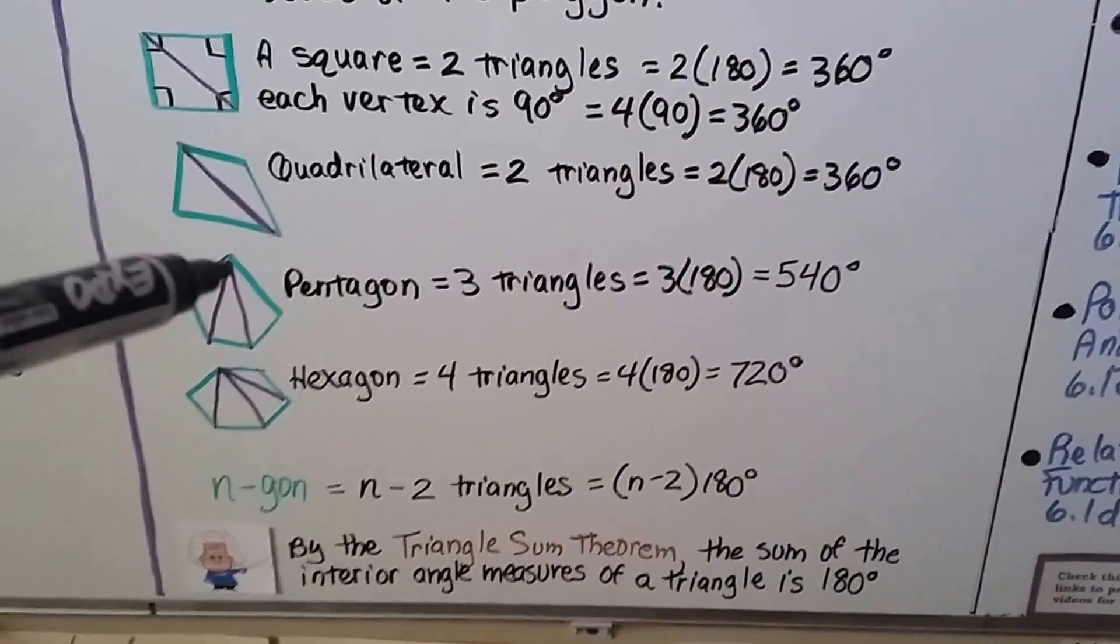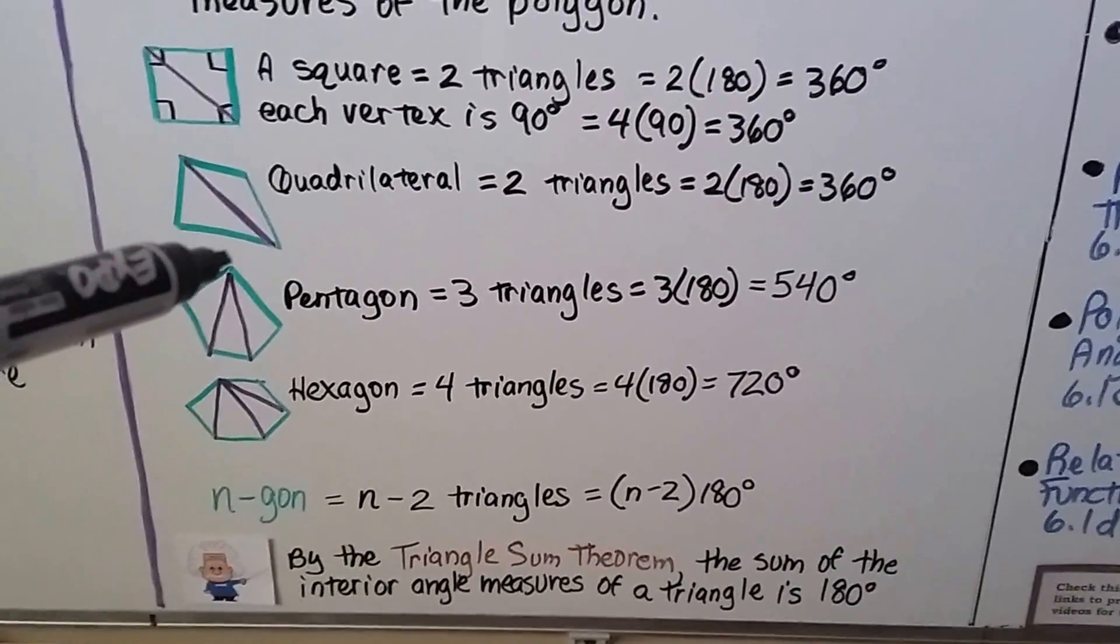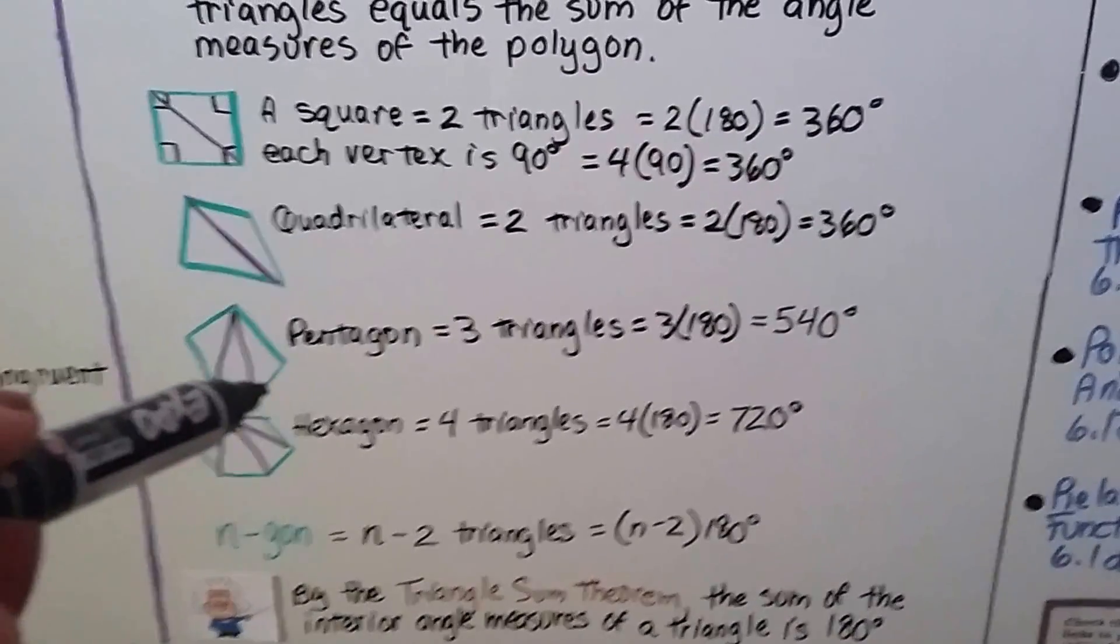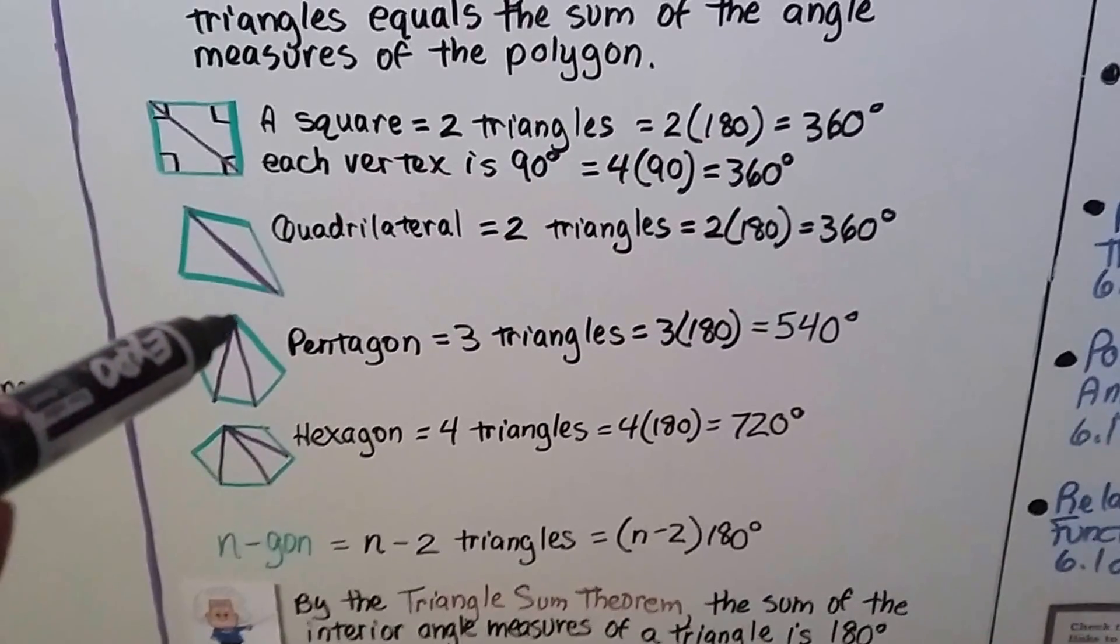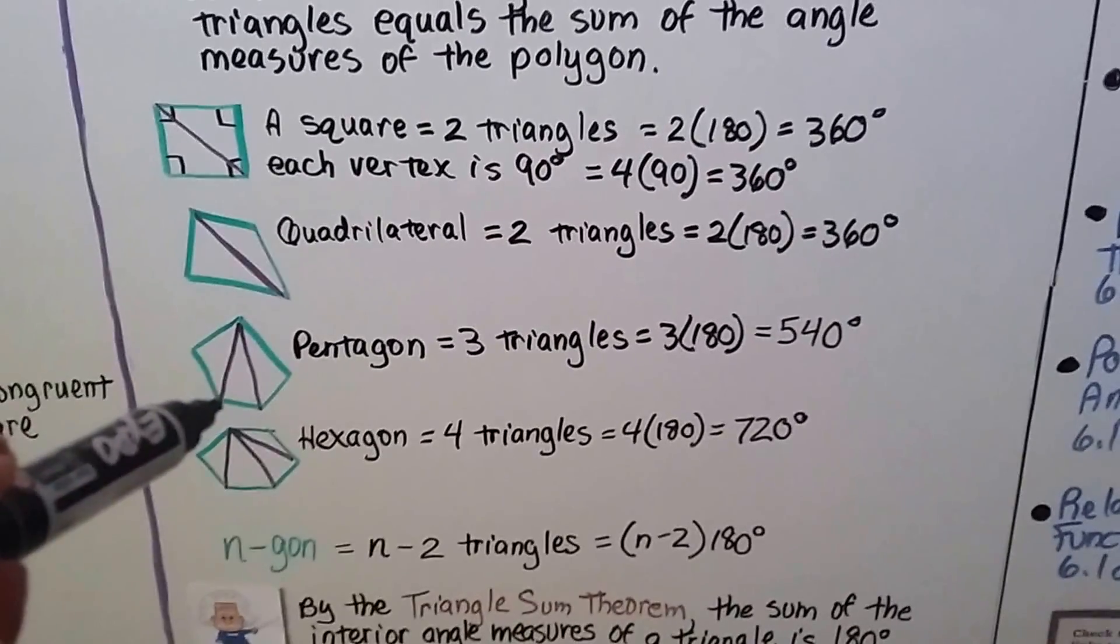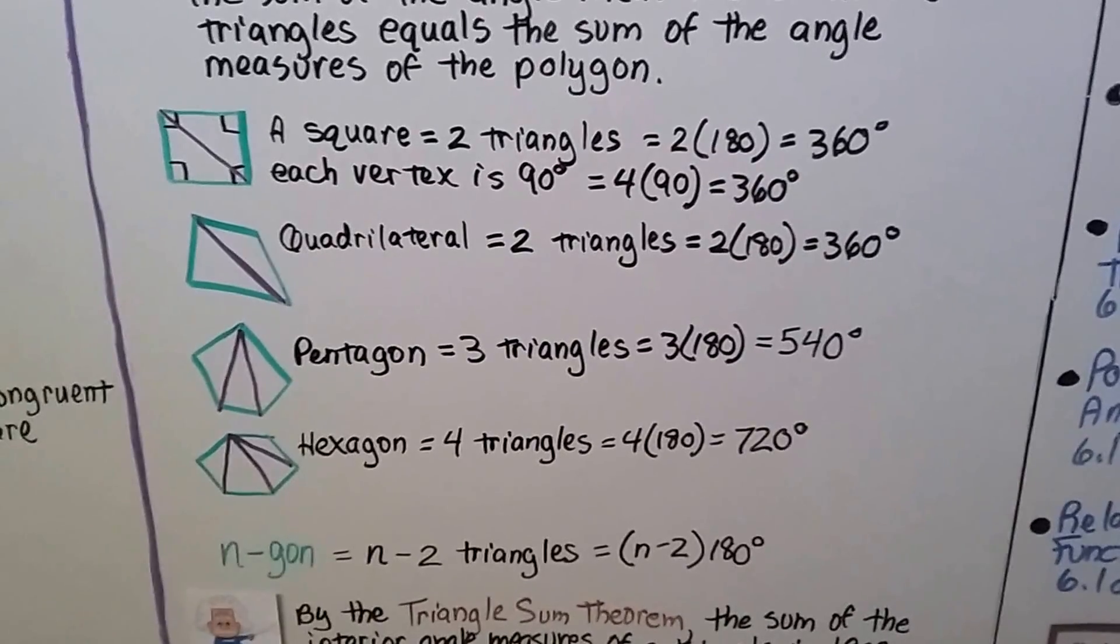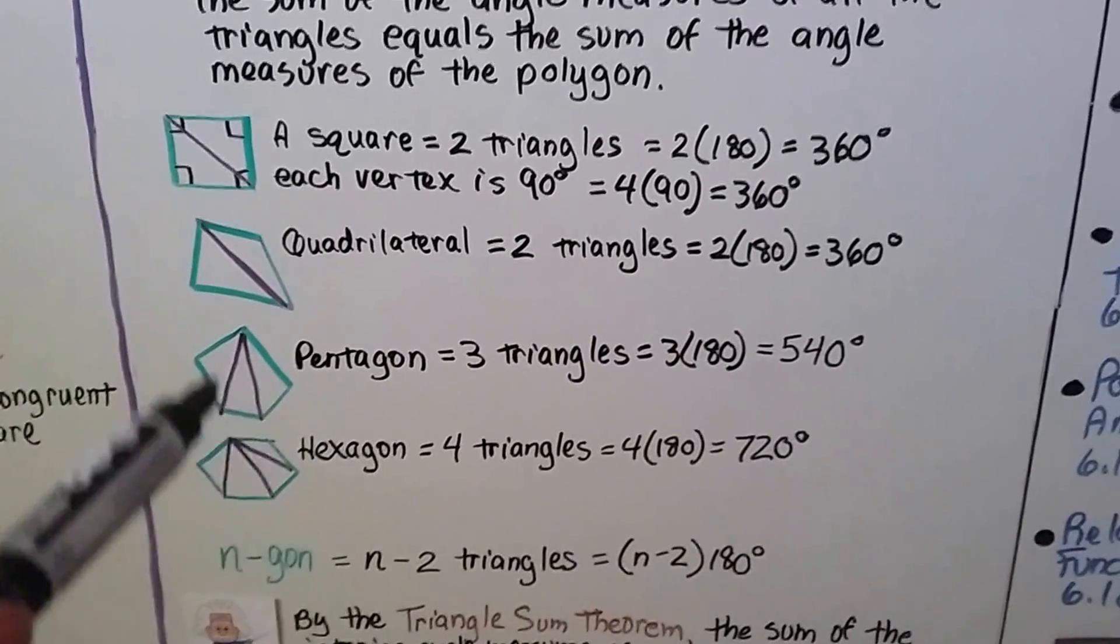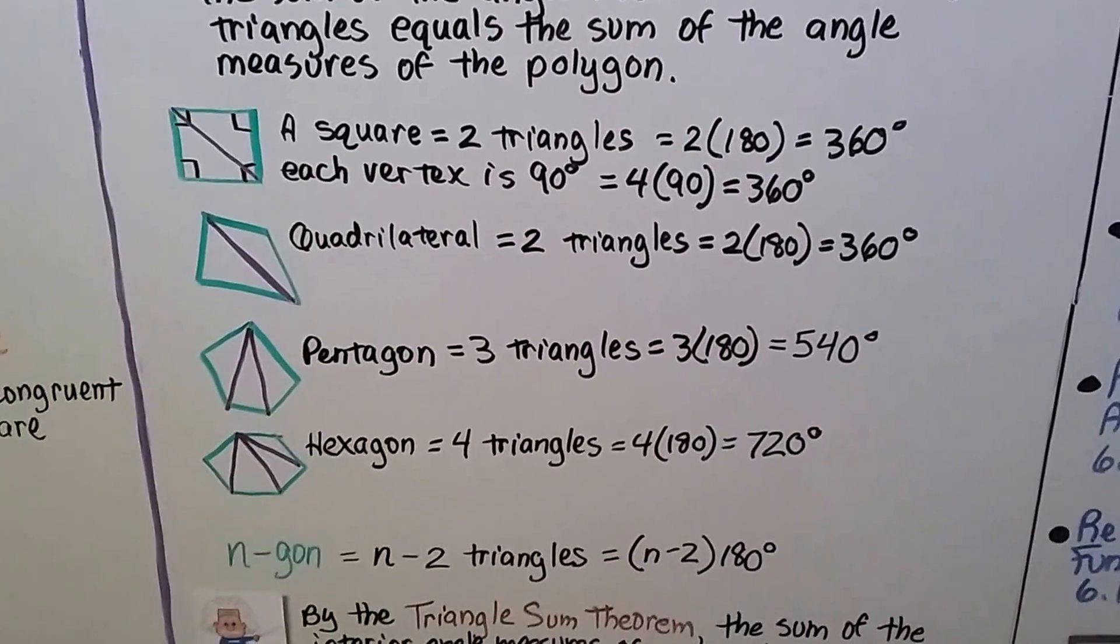For the pentagon, remember we can only be at one vertex to make our triangles, to make our diagonals. I make one coming down here and one coming down here. See how I draw the diagonal from the vertex we've chosen to another vertex? It made three triangles. Three times 180 is 540. So the interior angle measures of a pentagon is 540.